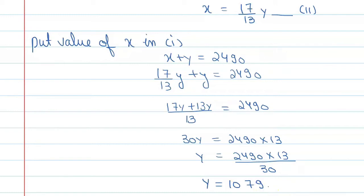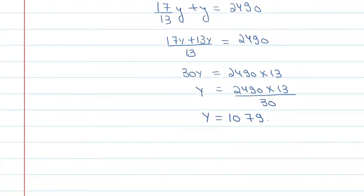Now to find the value of x, we will use equation number two. Put value of y in equation number two, which is x equal to 17 upon 13 y. So from here you can say x equal to 17 upon 13 into 1079.